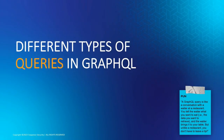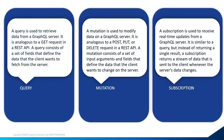Different types of queries in GraphQL — unlike REST, which has POST, GET, DELETE, OPTIONS, HEAD, TRACE, etc., in GraphQL we have three major query types: Queries, Subscription, and Mutation.